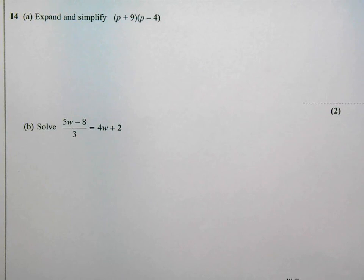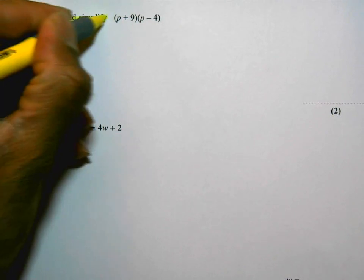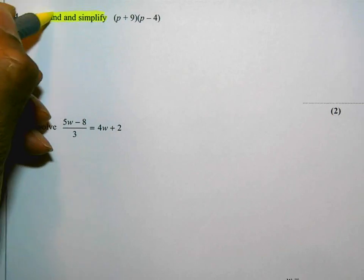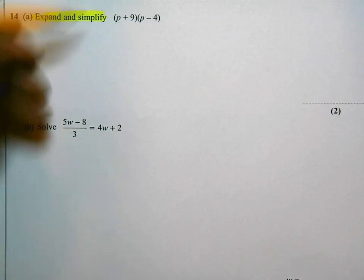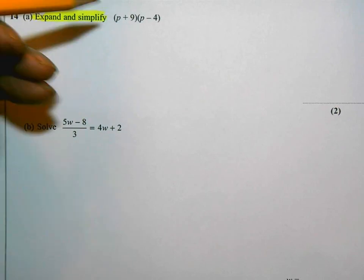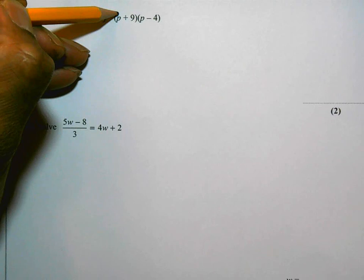Alright, the first part says expand and simplify. Expand means to multiply out and simplify means to tidy up. This is a pair of brackets, a type of calculation that you should be familiar with. Some people use the box method for this, some people just use the arrows. I'm going to use the arrows for this.